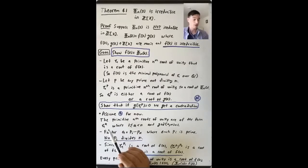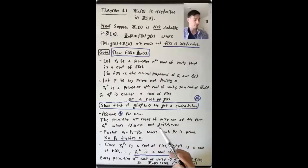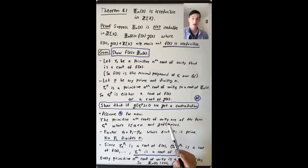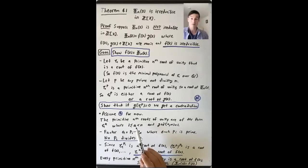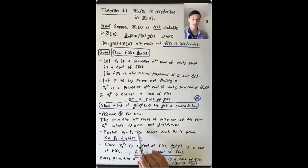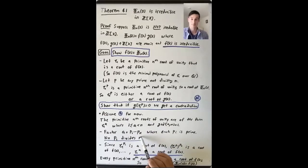What are the primitive n-th roots of unity? They are all zeta to the a, where a is between 1 and n and has gcd 1 with n. You can write every one as zeta to some power where that power is an integer between 1 and n with gcd 1 with n. Having gcd 1 with n means when you take this integer a and factor it into a product of primes, no prime in that factorization divides n. So we're going to factor one of these a's as p1 times p2 times ... times pk, a product of primes — not necessarily distinct — and none of these primes pi divides n.